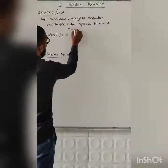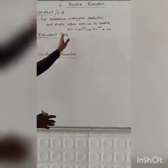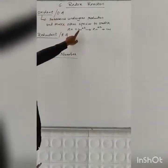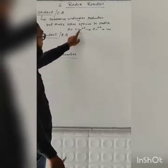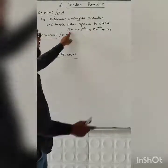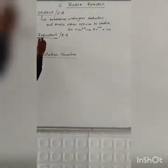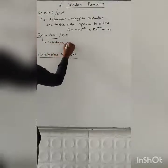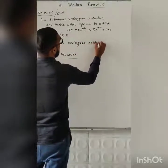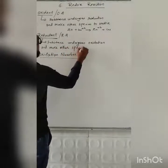For example, if I say we have the reaction Zn plus Cu²⁺ gives Zn²⁺ plus Cu. So here, among these redox reactions, what is the oxidant or oxidizing agent? Here Cu²⁺ is undergoing reduction — it takes 2 electrons and forms copper metal. And this copper makes Zn oxidize, meaning Zn loses electrons. So Zn becomes the reductant.